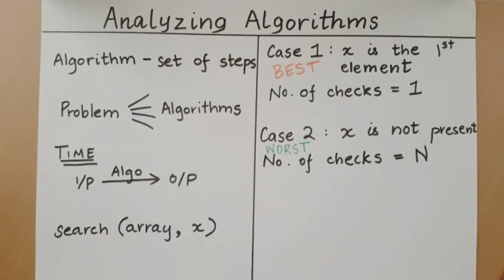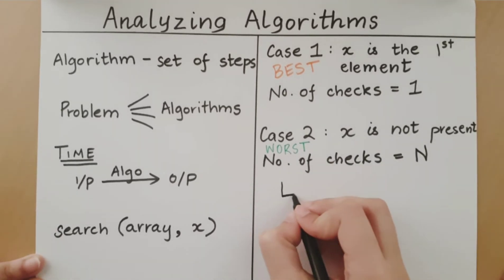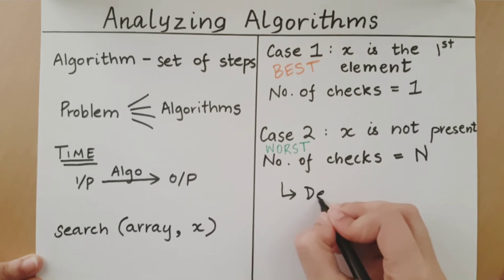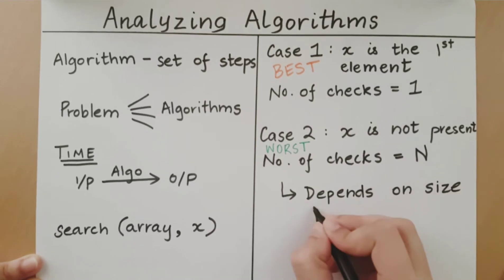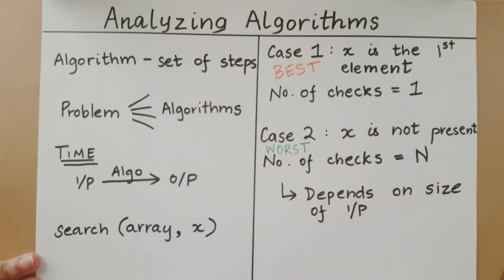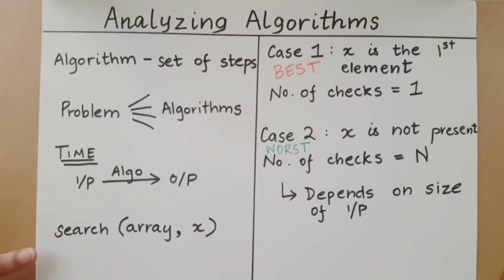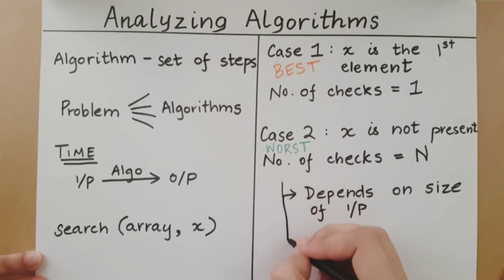When analyzing algorithms and comparing them on the basis of time, we are concerned with the worst case. This is because the worst case is dependent on the size of the input given to the algorithm. Also, when we analyze the worst case of an algorithm and we try to reduce the worst case time, we will in the process also be reducing the best case and the average case as well. So it is better to be concerned with the worst case when analyzing algorithms.